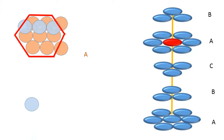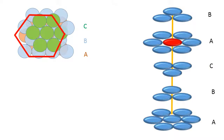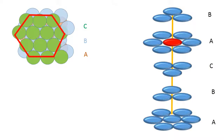Now let us place the blue colored sphere. I see that there are 3 spheres inside the hexagon, and therefore I name it as a B layer because the arrangement is different from the first layer. I get two types of voids: tetrahedral and octahedral. In the hexagonal closed packing, I had covered the tetrahedral voids, so this time I would be covering the octahedral voids. I see that there are only 3 spheres inside the hexagon, and therefore I name it as a C layer.